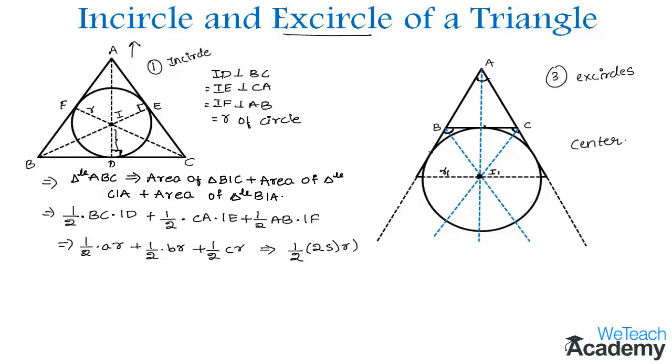Then 2 and 2 cancel, and we get SR as the value of the area of triangle ABC. So Δ = SR is one of the formulas.